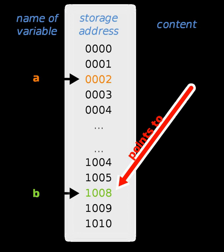A pointer which does not have any address assigned to it is called a wild pointer. Any attempt to use such uninitialized pointers can cause unexpected behavior, either because the initial value is not a valid address, or because using it may damage other parts of the program. The result is often a segmentation fault, storage violation or wild branch used as a function pointer or branch address.